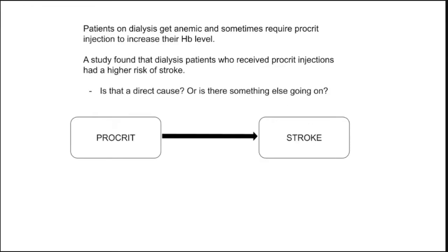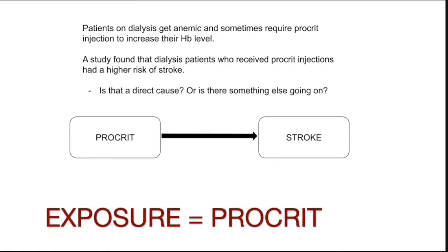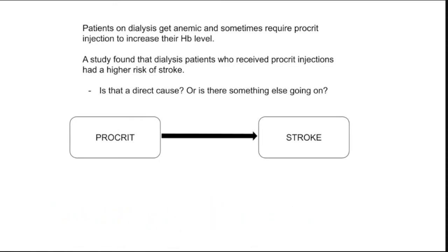I'm going to start by using an example. Patients on dialysis get anemic, and sometimes they require procreate injection to increase their hemoglobin level. A study found that dialysis patients who receive procreate injections had a higher risk of stroke. So the question is: is that a direct cause or is there something else going on? The exposure here is procreate, and the outcome here is stroke.